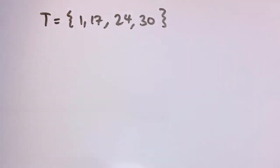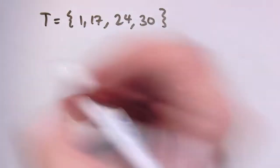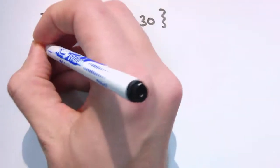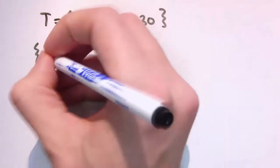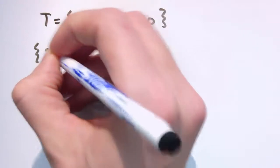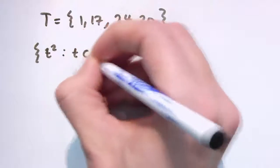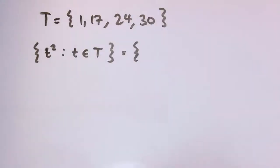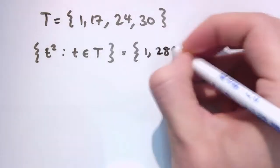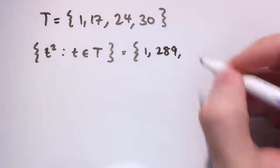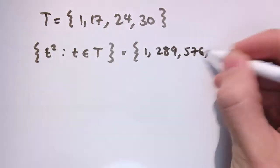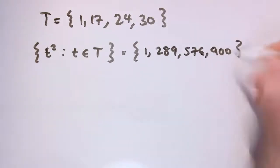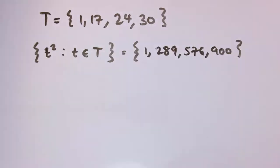Now I don't have to use special sets for set builder notation. It might come up in another context. I might have this as my set T and I might define a new set which is say all of the values of T squared where T is in the set T. And all I would do then is just square all of these numbers. So one squared is one. 17 squared is 289. 24 squared is 576. And 30 squared is 900. So that would be the set T squared where T is in T.